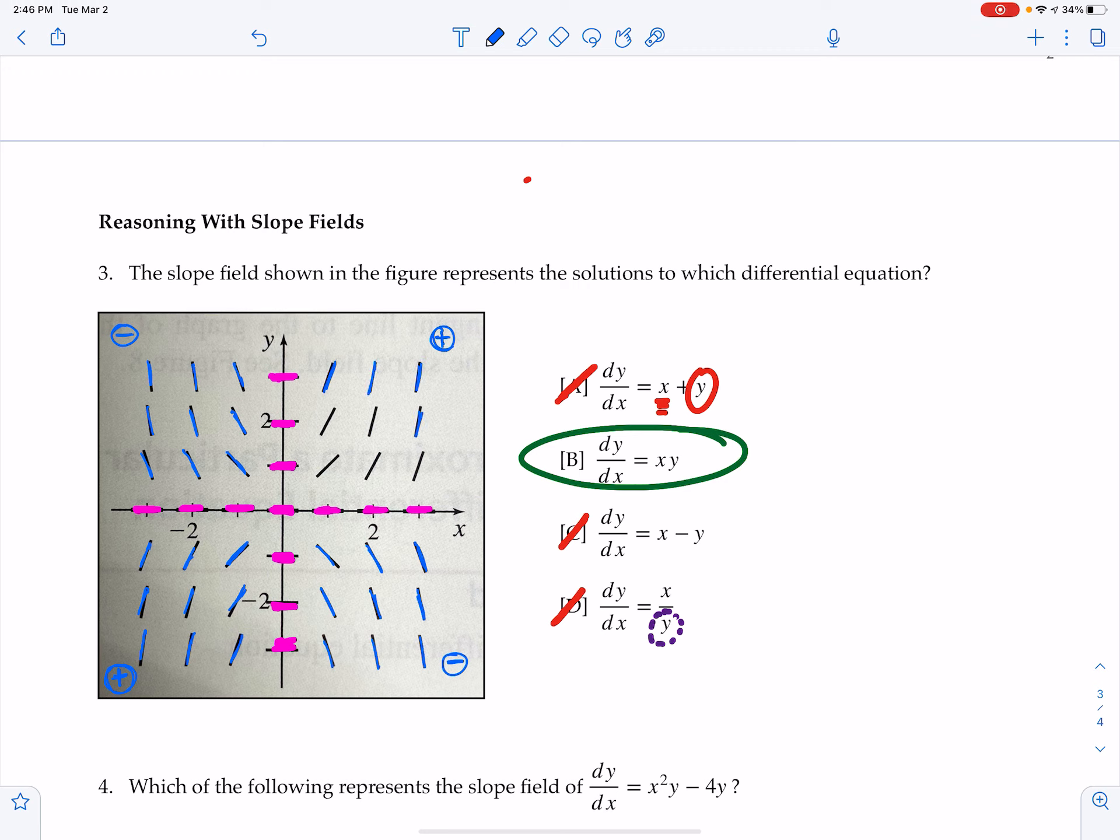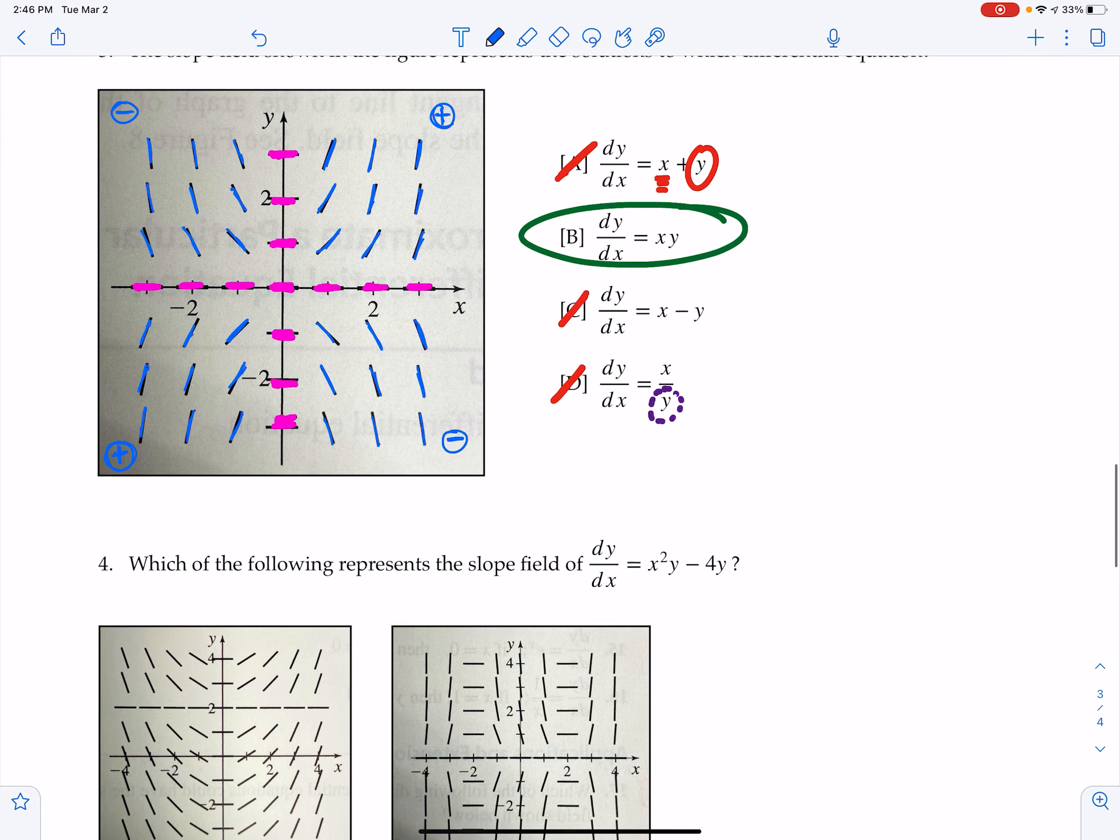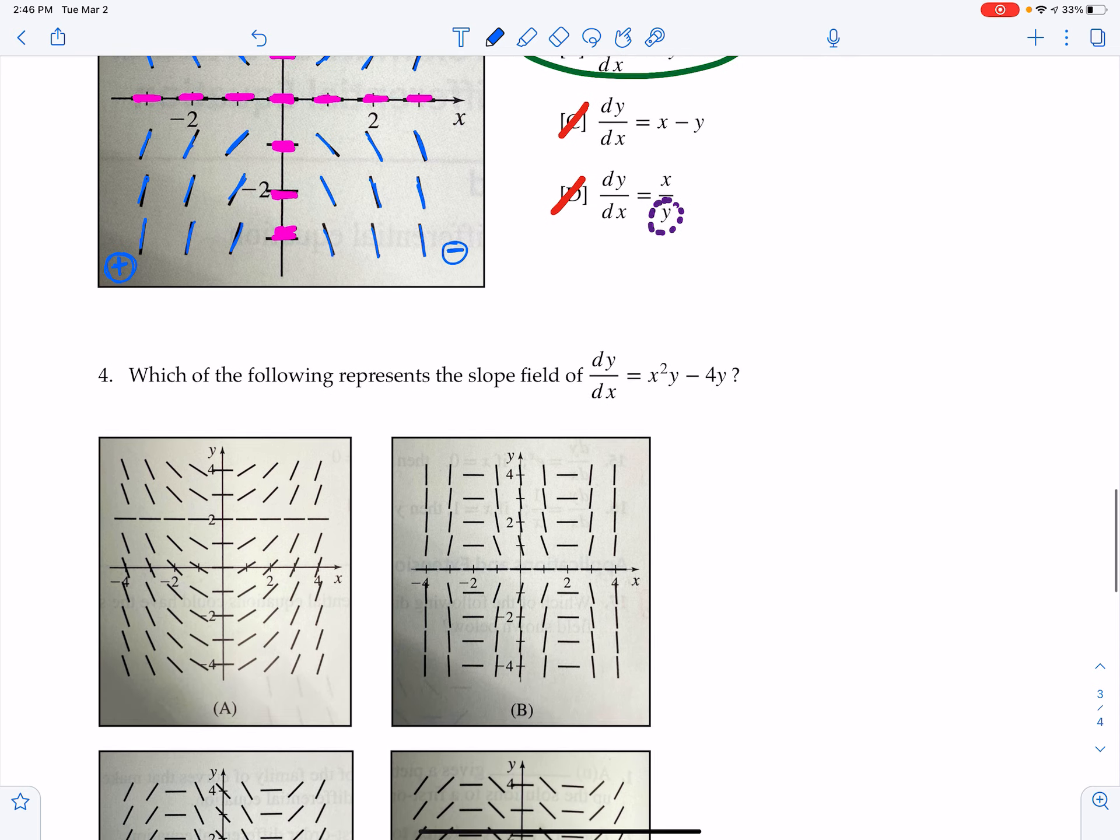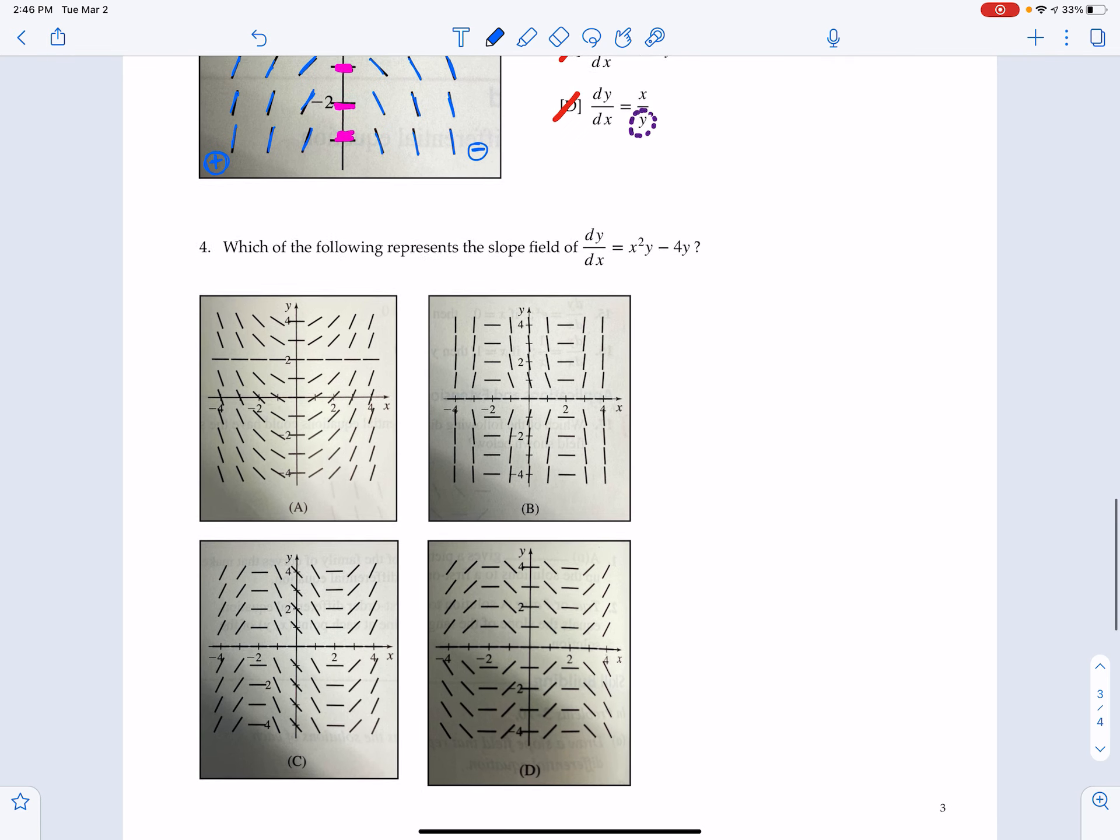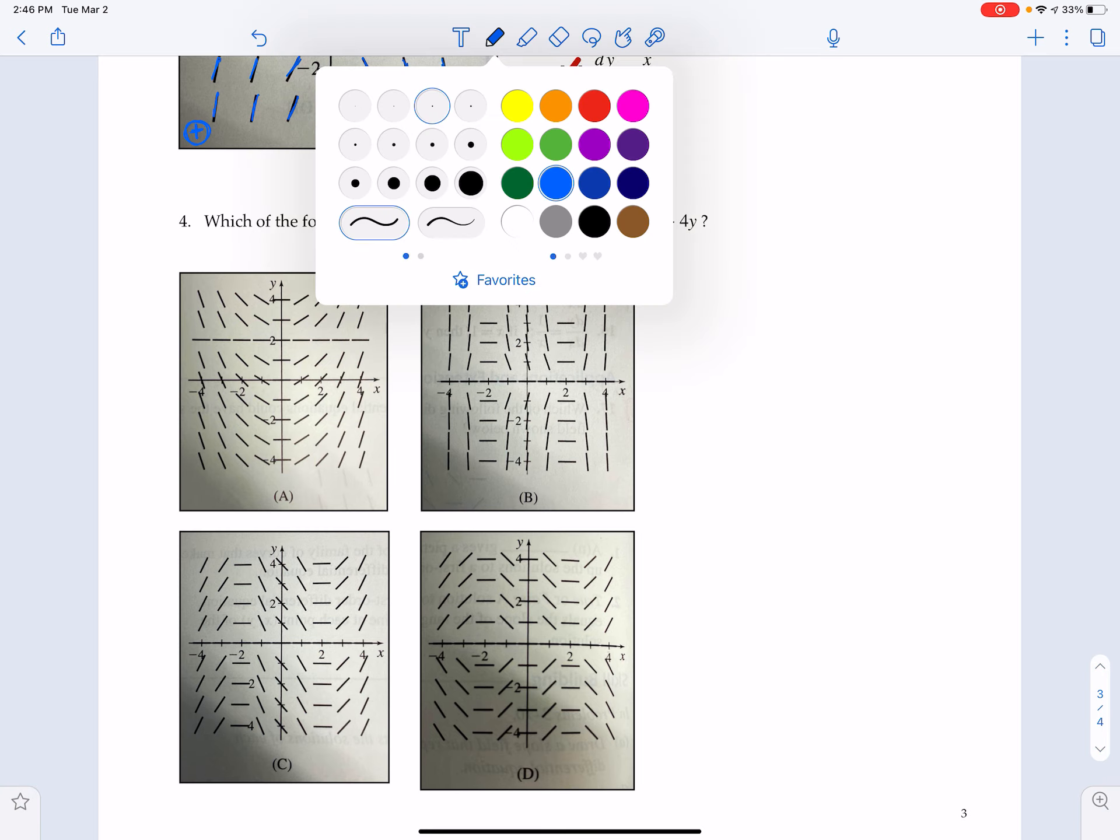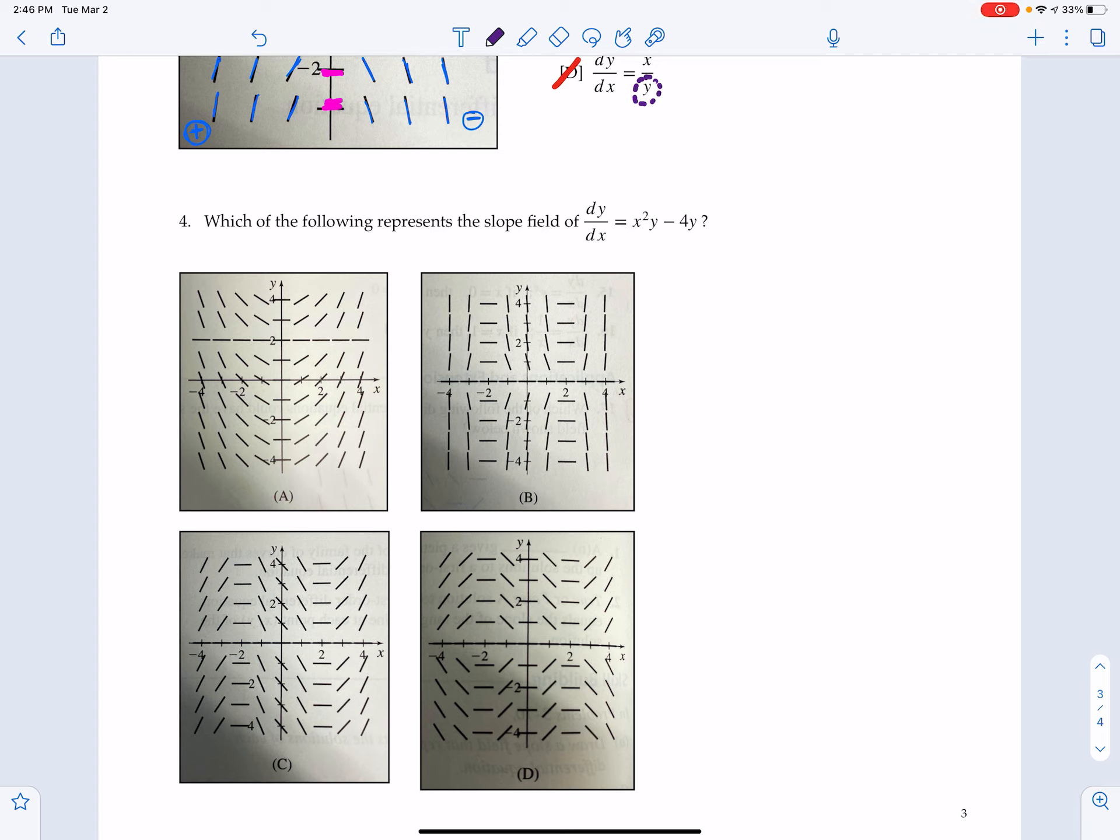Number three, the one that we're looking at right now, is a really common example of a multiple choice AP test, or AP question, I should say, related to slope fields. Now, we're going to peel down to number four, and this does the reverse. This gives us the equation, and then we have to pick the proper slope field, and they're lettered at the bottom of each picture, A, B, C, and D. This is sometimes a little bit trickier because it's really time-consuming to kind of go through each slope field and do the same thing we just did with number three.